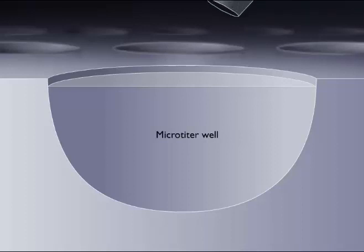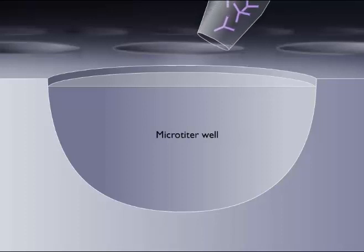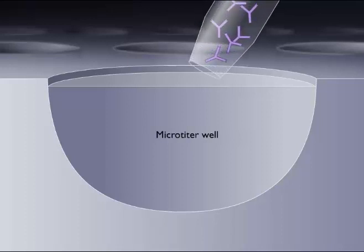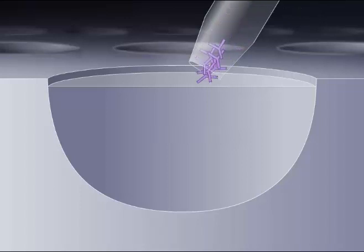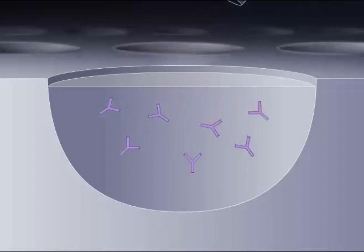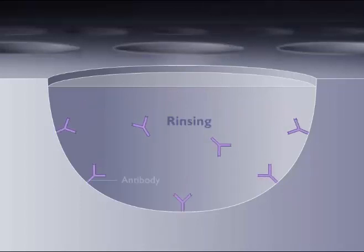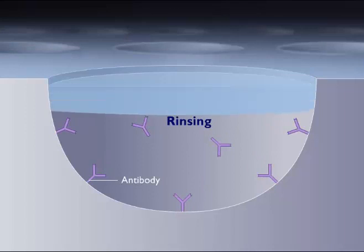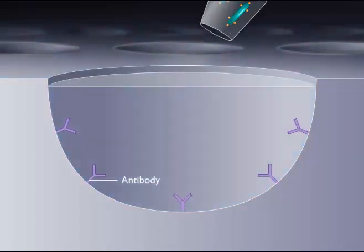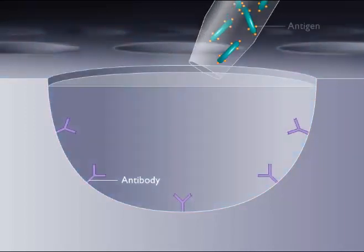The direct ELISA is a test for the presence of antigen. In this procedure, a known antibody is adsorbed to the inside of the well in a microtiter plate. After rinsing to remove excess antibody, the sample suspected of containing the antigen is added.